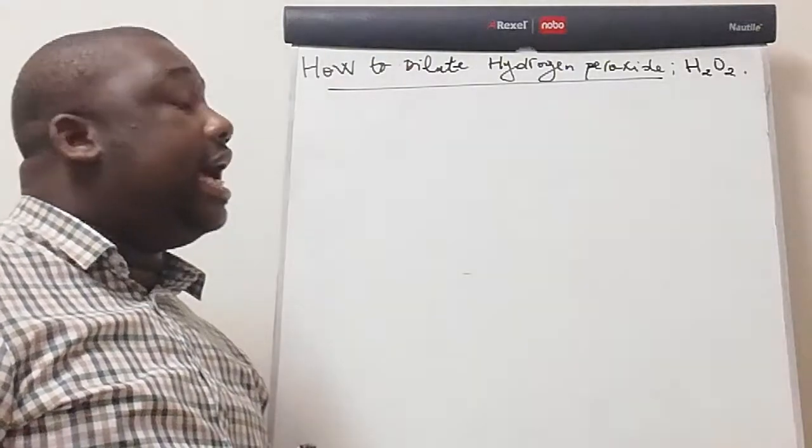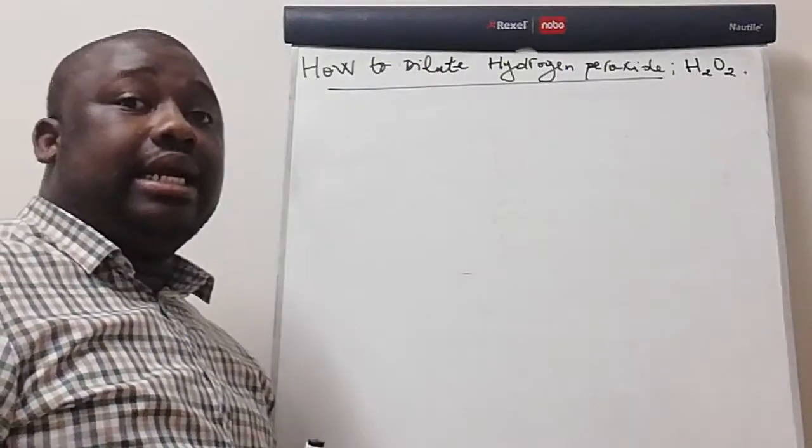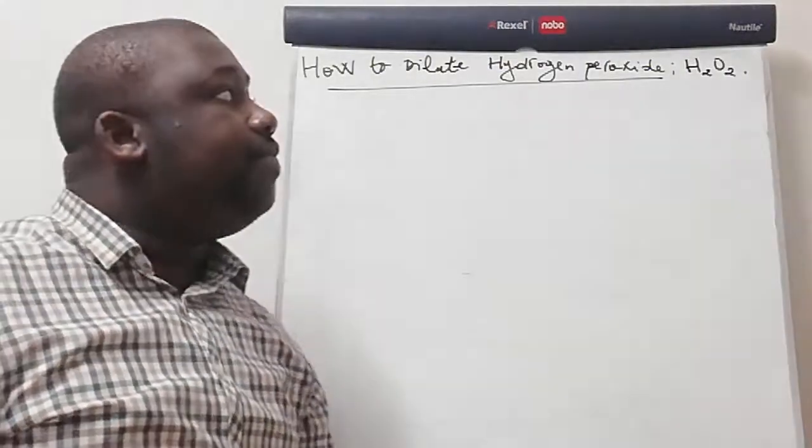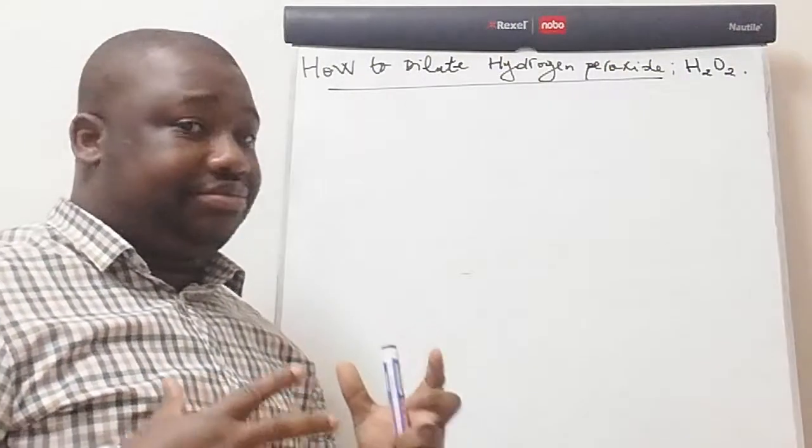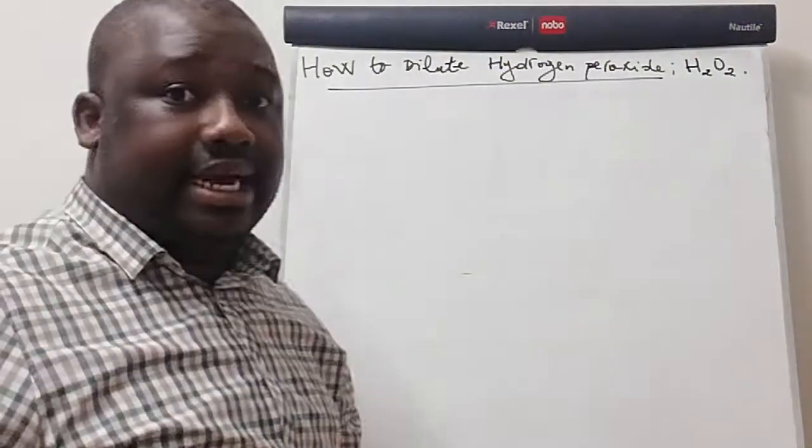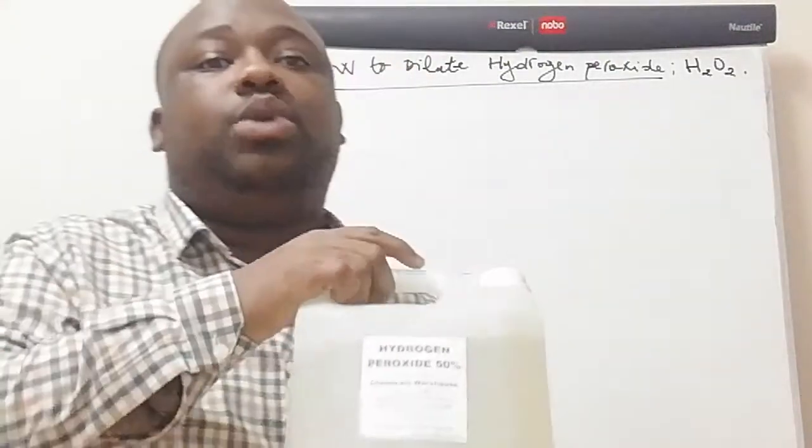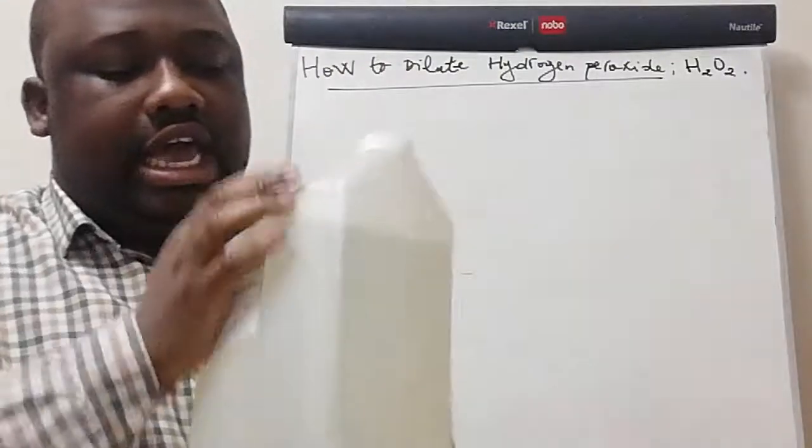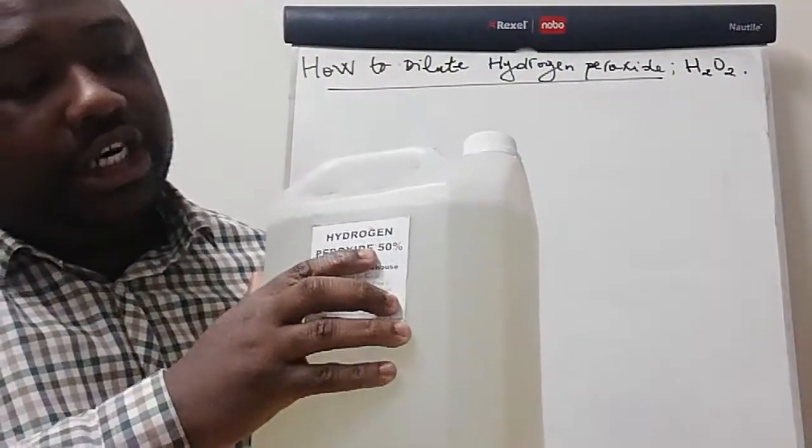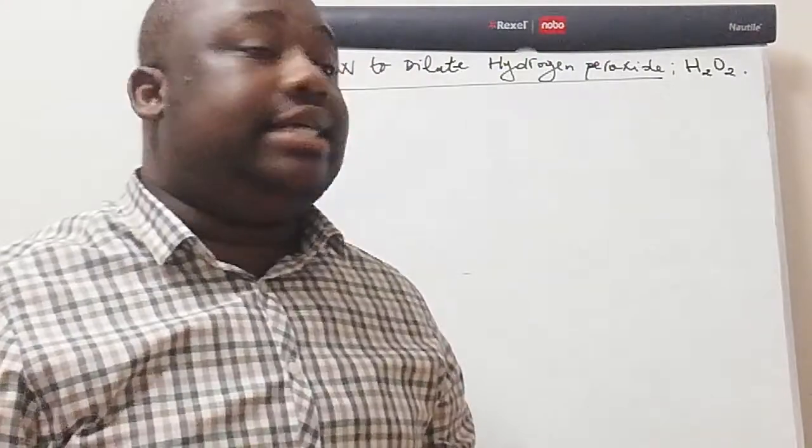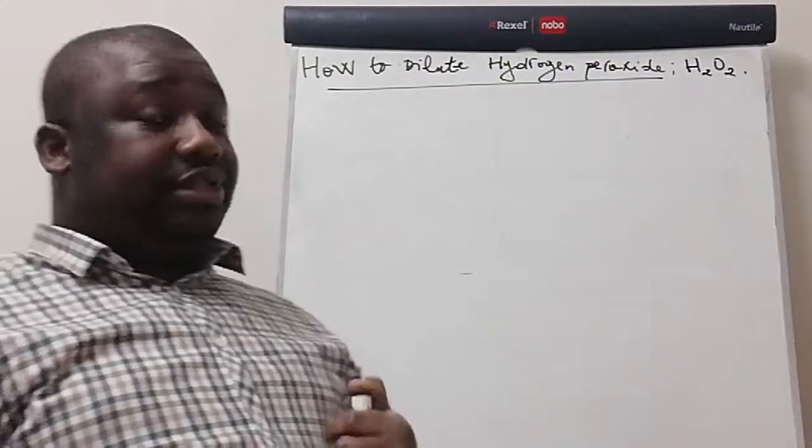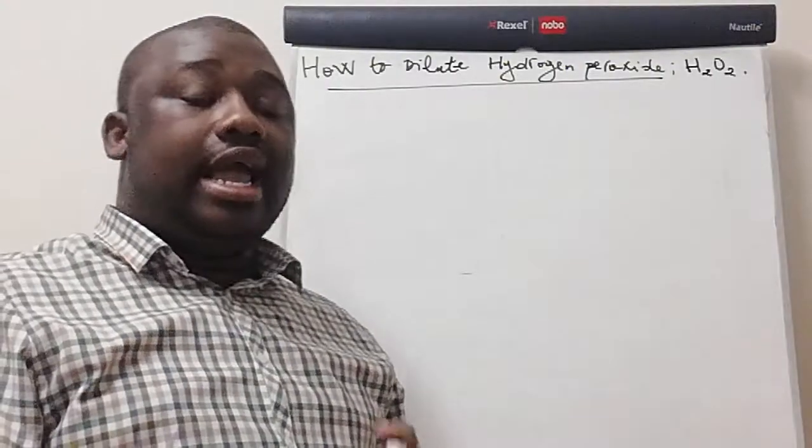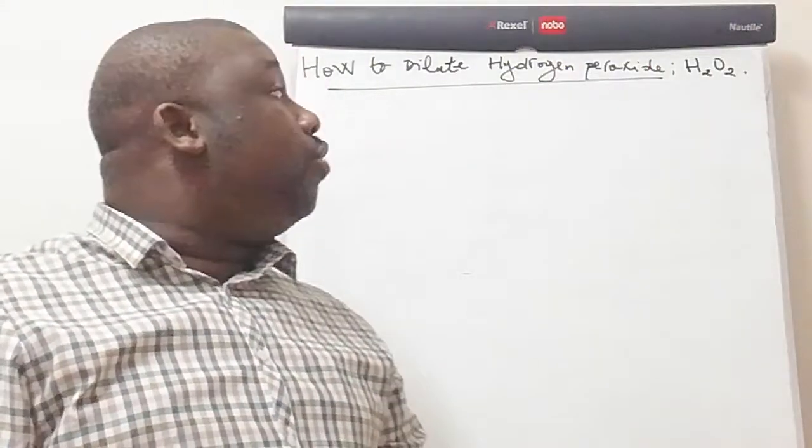So what is hydrogen peroxide in the first place? It's a chemical compound with the formula H2O2. In terms of appearance, I do have hydrogen peroxide with me. You can see this is hydrogen peroxide. I have about 50% hydrogen peroxide. And please guys, when you're working on this chemical, you must be careful because it's a very strong and corrosive chemical.